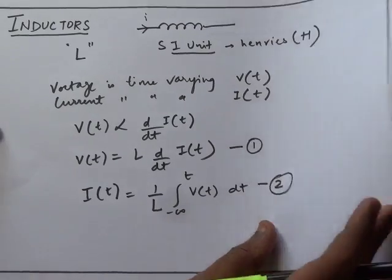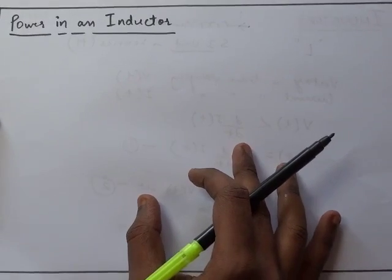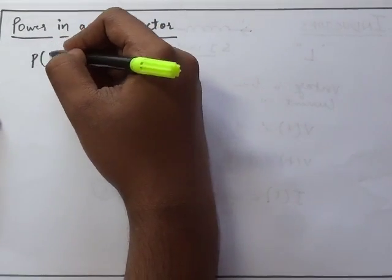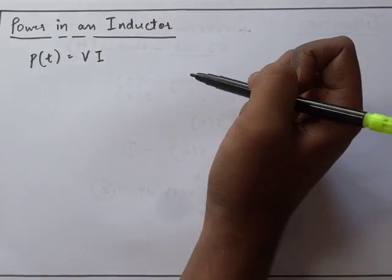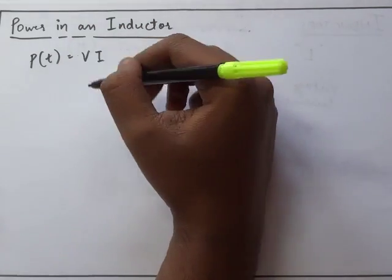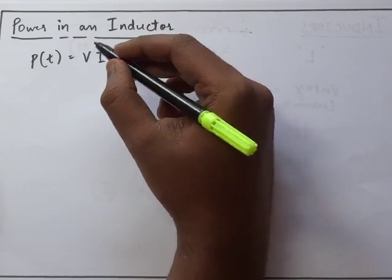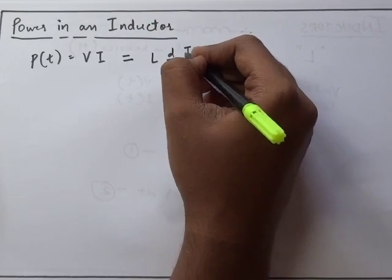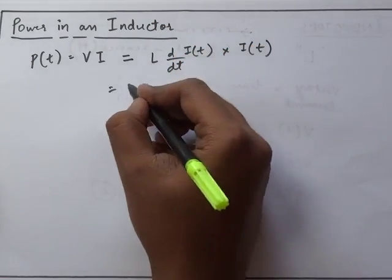Now let us see power in an inductor. Power in an inductor is also time varying, hence it is denoted as P(t) and is given by V·I. Here V and I are voltage and current. Let us substitute values for voltage and current here. By doing that I get V·I = L(dI(t)/dt)·I(t). Rearranging this...